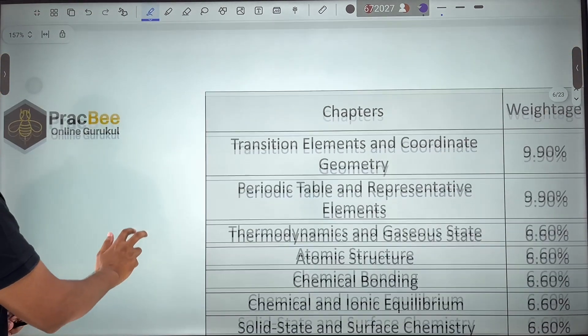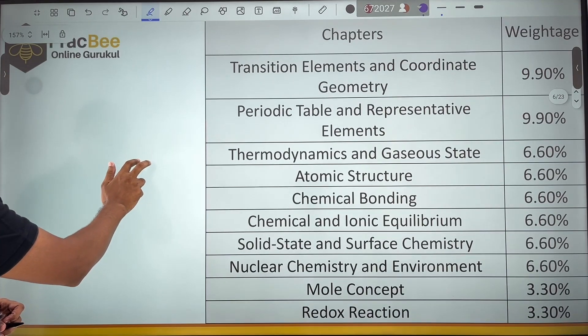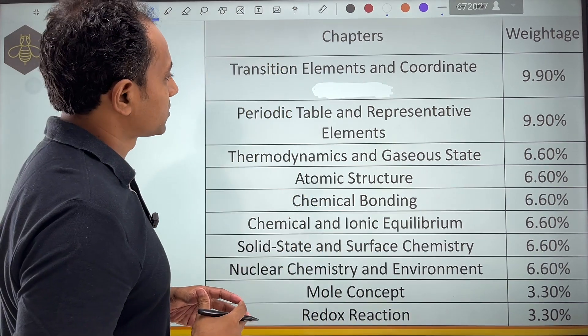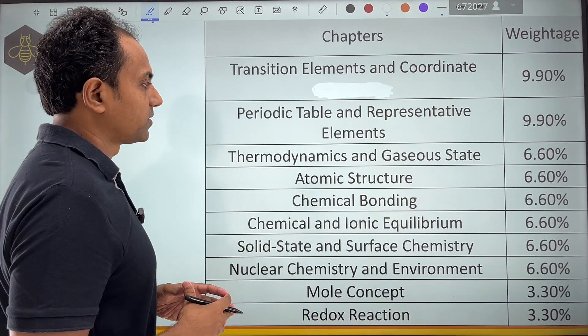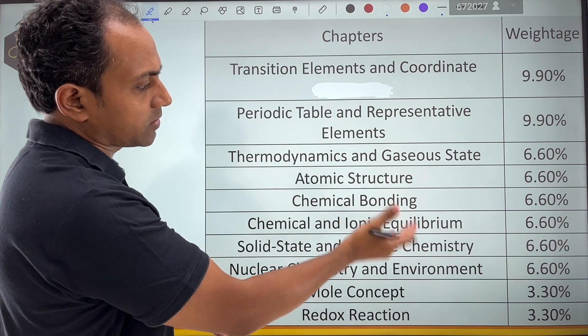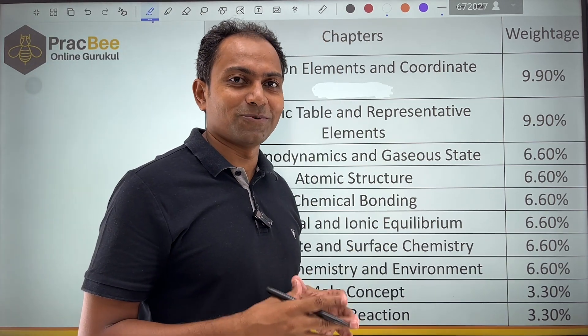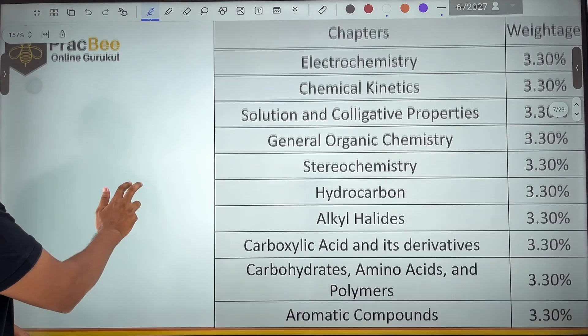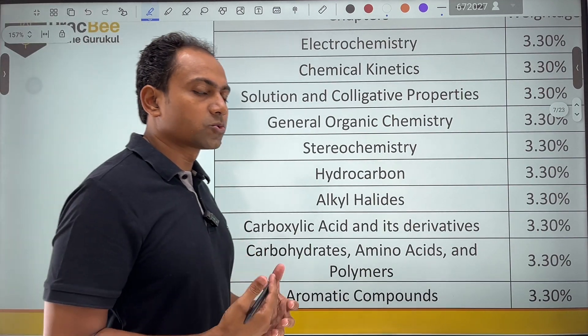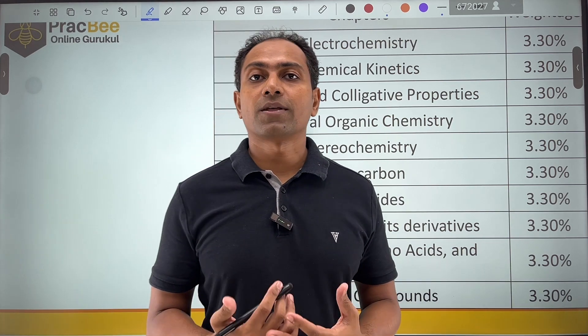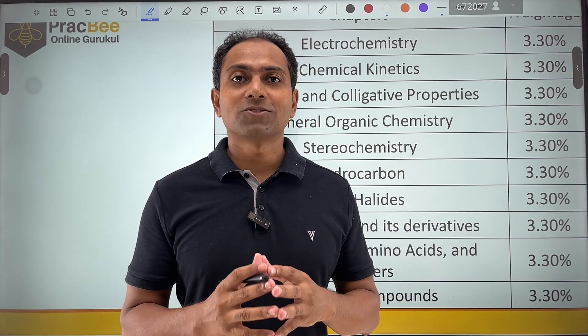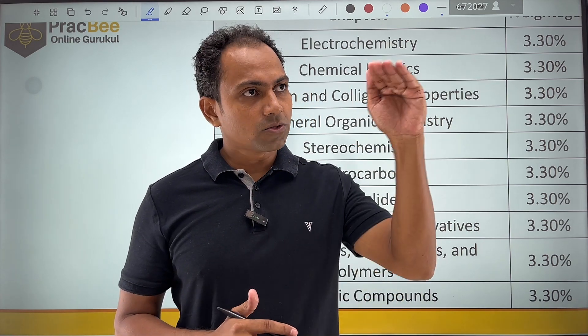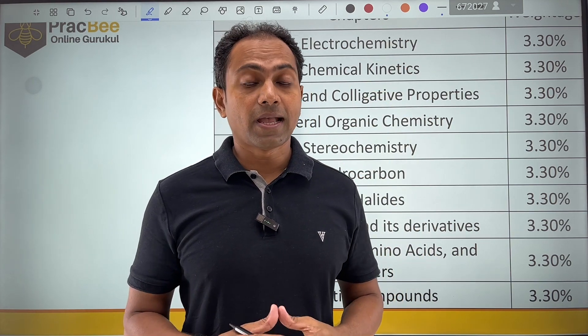Now if I go towards the weightage of chemistry, again you can see there is an order of different kinds of weightages. There is transition element and coordinate chemistry, periodic table, representative elements, thermodynamics. Sometimes a student will feel there is a topic that I have not done but that topic has very less weightage. So you may need to make a conscious decision about what is the order of topics based on weightage and my ability.